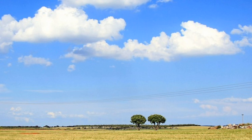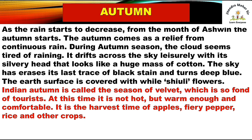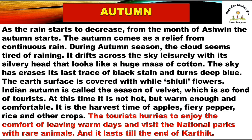The earth's surface is covered with white shivoli flowers. Indian autumn is called the season of velvet, which is so fond of tourists. At this time it is not so hot, but warm enough and comfortable. It is the harvest time of apples, fiery paper, rice and other crops. The tourist hurries to enjoy warm days and visit national parks with rare animals, and it lasts till the end of Karthik.